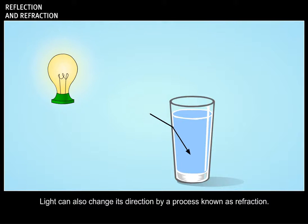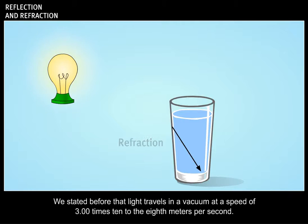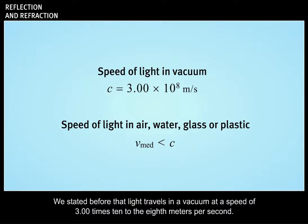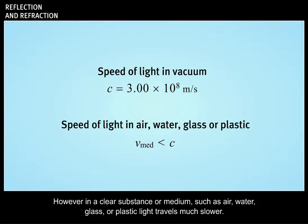Light can also change its direction by a process known as refraction. We stated before that light travels in a vacuum at a speed of 3.00 times 10 to the 8 meters per second. However, in a clear substance or medium, such as air, water, glass, or plastic, light travels much slower.